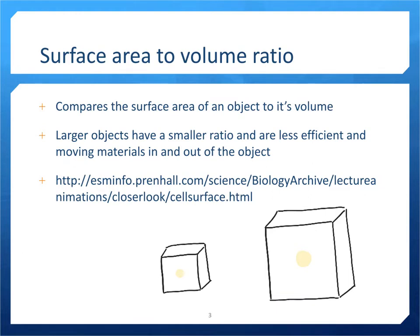Large cells have a harder time surviving because of something called surface area-to-volume ratio. Here we have two cells — one is a little bit larger than the other. When nutrients try to get into the cell to feed all the different cell parts, it's much more efficient if the cell is small. In a small cell there's only a short distance to travel to the center, but in a larger cell nutrients have to travel a lot farther. Because things get into cells through diffusion, small cells get fed much more quickly than large cells. So when a cell gets too big and too inefficient, it needs to divide.